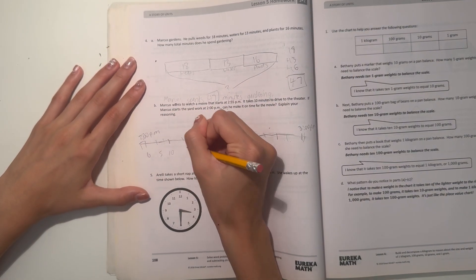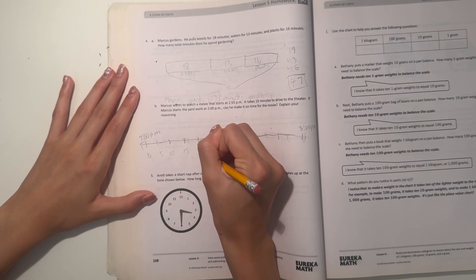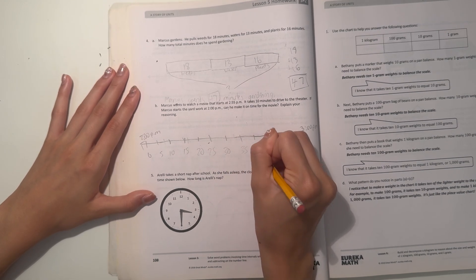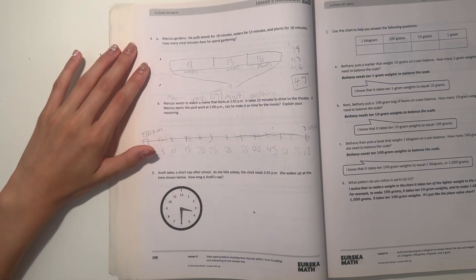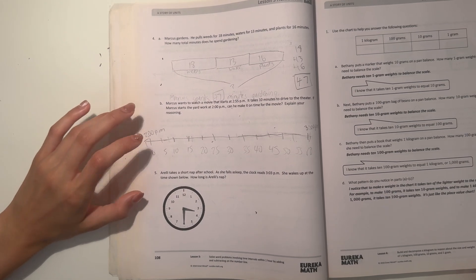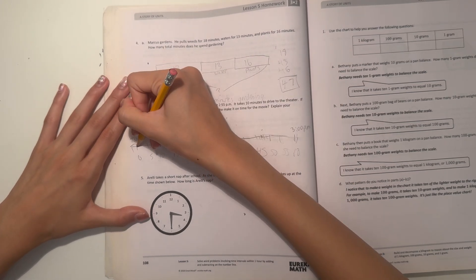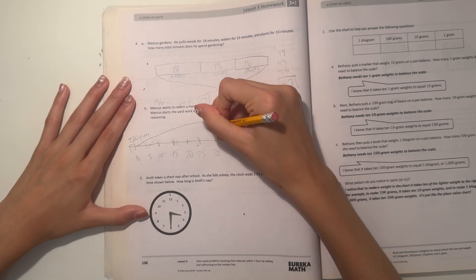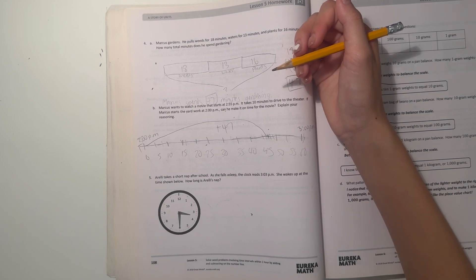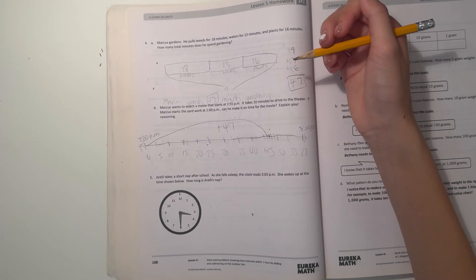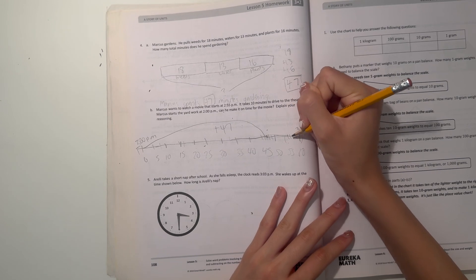First, let's label. So we have 0, 5, 10, 12, 20, 25, 30, 40, 45, 50, and 55, and 60. So he starts the yard work at 2 and takes 47 minutes. So let's find 47. 46, 47 would be here. So it takes him, so that's plus 47 minutes already. So after that is the yard work, it takes him 10 minutes to drive the theater. So 47 plus 10, that ended up at 57.